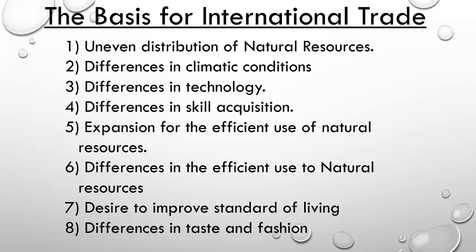We are going to be looking at the basis for international trade. Number one is uneven distribution of natural resources. We have international trade because resources across the six continents of the world are not found uniformly. Some countries have an advantage in natural resources, others in technological development, industrial development, or human capacity. So all countries need each other in order to actualize their goals and objectives.